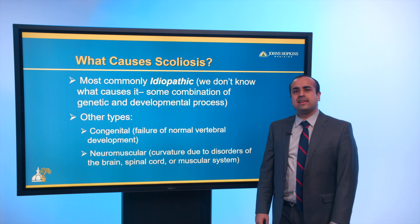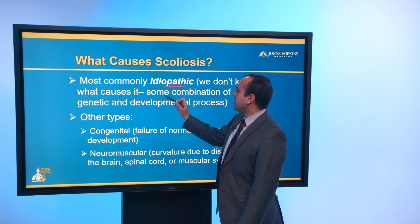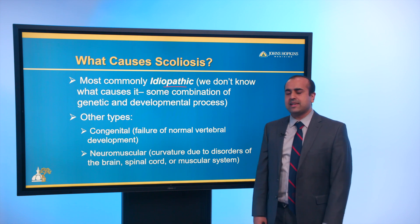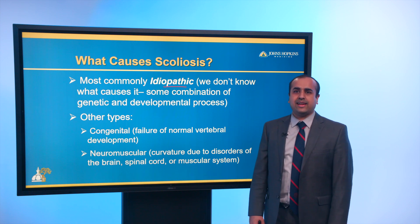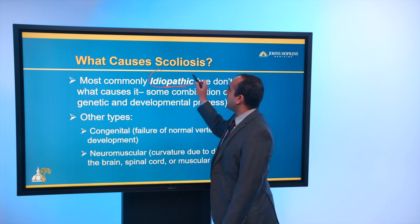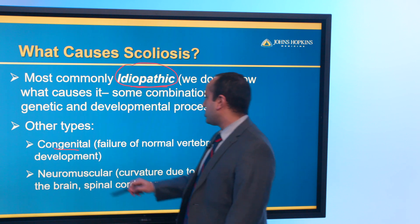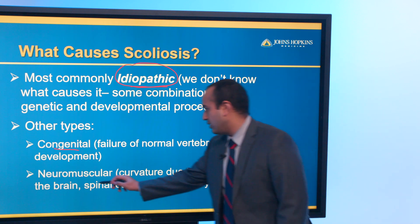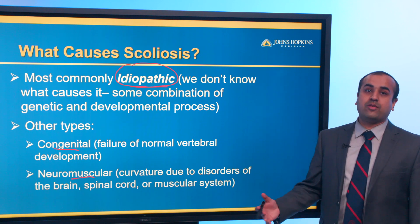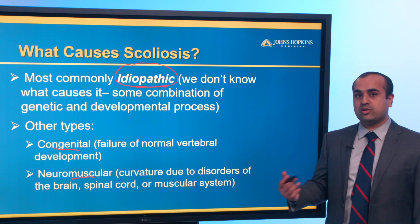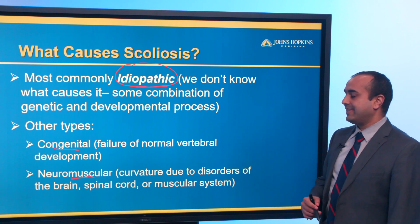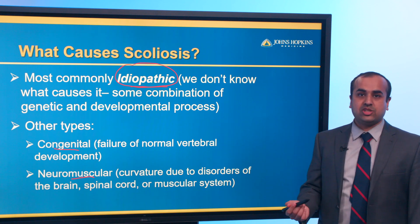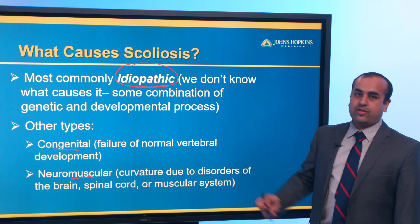What causes scoliosis? It's most commonly idiopathic, meaning we don't really know — it's some combination of genetics and developmental processes. It usually presents around adolescence but can present earlier, including juvenile or infantile scoliosis. There are other types as well: congenital scoliosis due to failure of normal vertebral development — either failure of segmentation or formation — and neuromuscular scoliosis due to disorders of the brain, spinal cord, or muscular system, such as cerebral palsy or muscular dystrophy. Physical examination, especially reflexes, and taking a good history can help determine which category a patient falls into.